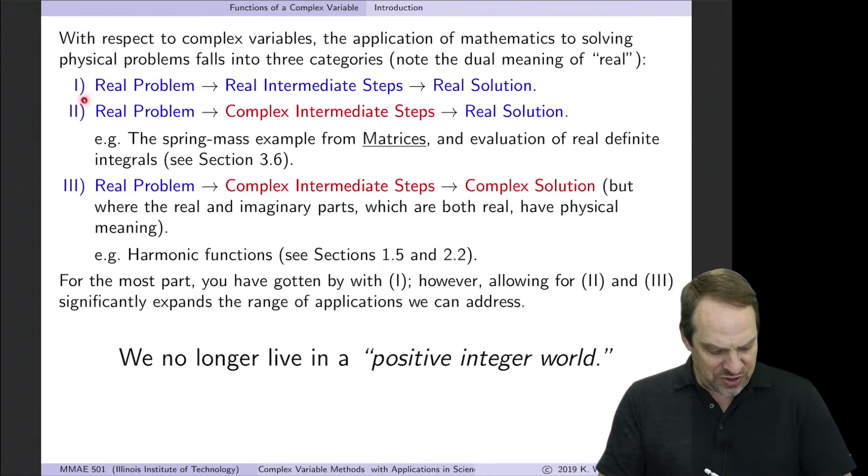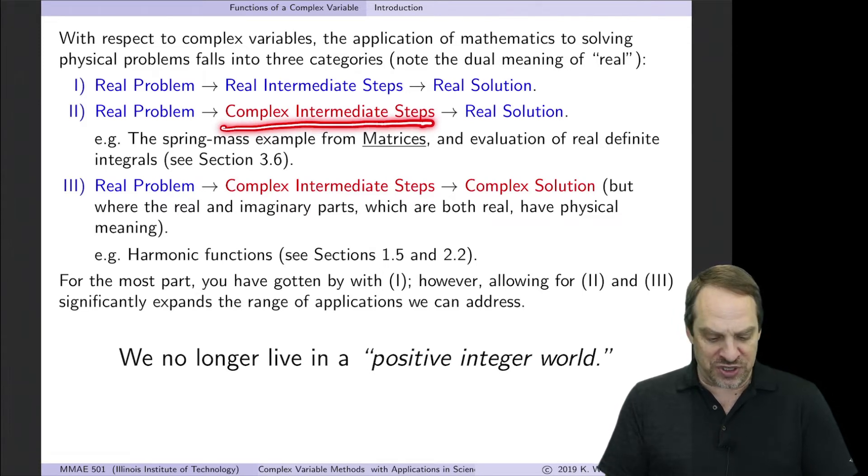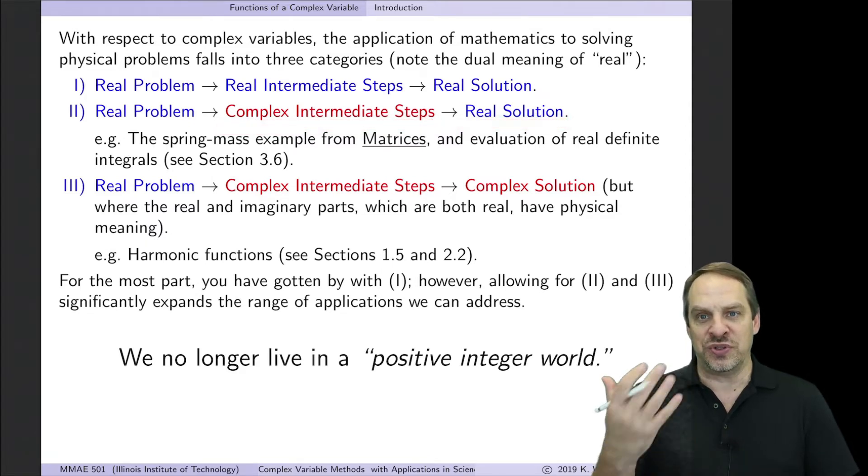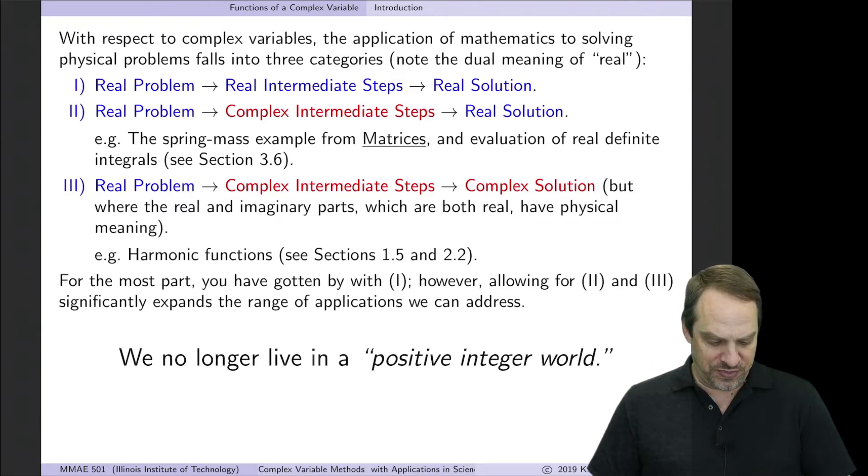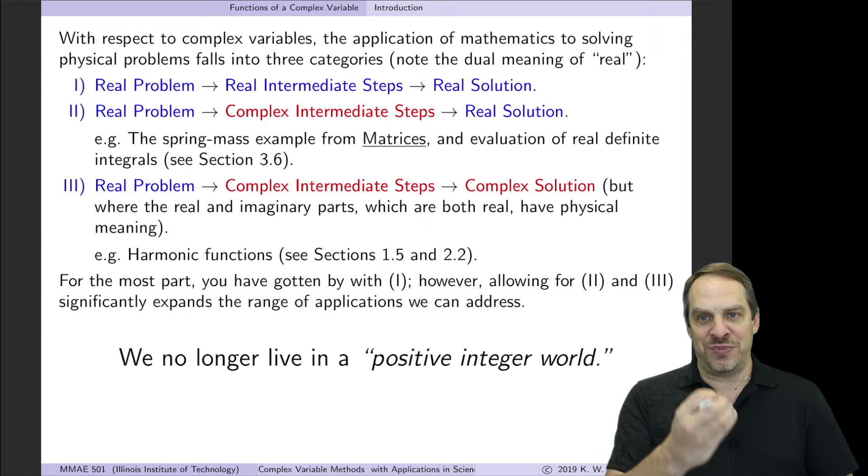You may have seen some situations where you start off with the real problem. Again, real in both senses. But there are some complex intermediate steps. So you get some complex numbers, complex variables, complex functions. But somehow, magically, in the end, you end up with a solution that is all written in terms of real numbers, functions, and so on. If you watch the videos on matrices, you'll remember the spring mass example that we did there. That's an example of that. It's a real system. The system mathematically can be represented in terms of real numbers and variables and functions and differential equations.